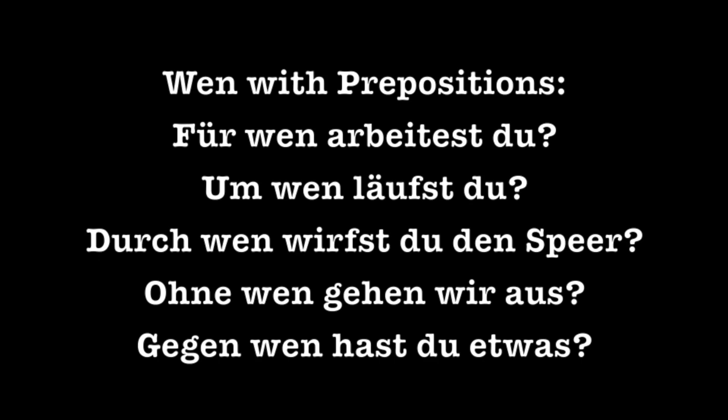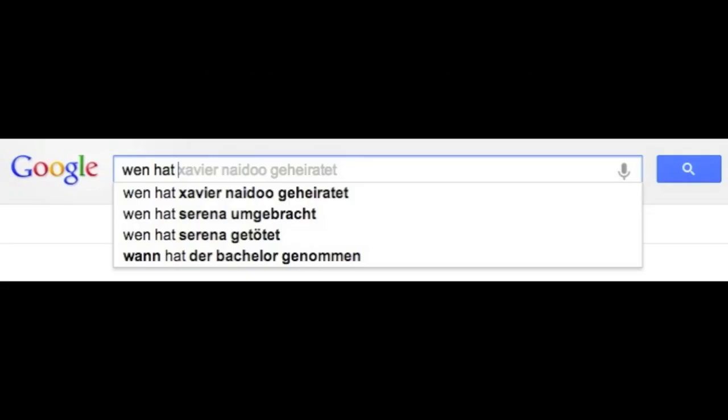Examples using Wen with accusative prepositions: Für wen arbeitest du (for whom do you work?), Um wen läufst du (around whom are you running?), Durch wen wirfst du den Speer (through whom are you throwing the spear?), Ohne wen gehen wir aus (without whom are we going out?), Gegen wen hast du etwas (against whom do you have something?). A Google search turns up: Wen hat Xavier Naidoo geheiratet (whom did Xavier Naidoo marry?), and Wen hat Serena umgebracht / Wen hat Serena getötet (whom did Serena kill?) — apparently from a TV show.